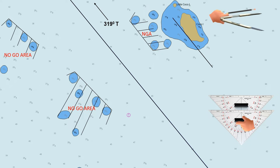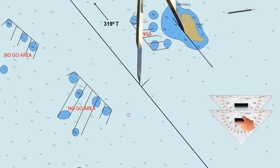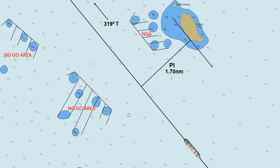Measure the distance from the planned track to the parallel index line — that is your PI distance, which in this chart is 1.70 nautical miles. Before discussing the not-less-than or NLT and the not-more-than or NMT lines, let us set this parallel index line first to the radar. Upon approaching the island, we need to set the parallel index line to our radar.